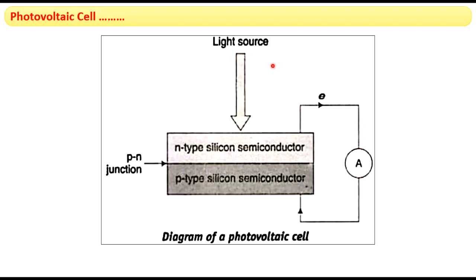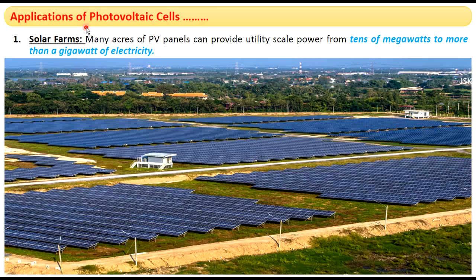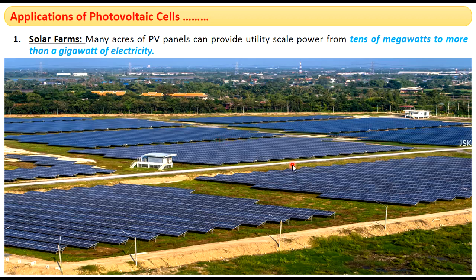This is the construction of the photovoltaic cell. Photovoltaic cells find applications in various fields. The first application is solar farms. Photovoltaic panels are installed over many acres of land to form solar farms. Generally, the electricity produced by a solar farm ranges from tens of megawatts to a gigawatt.